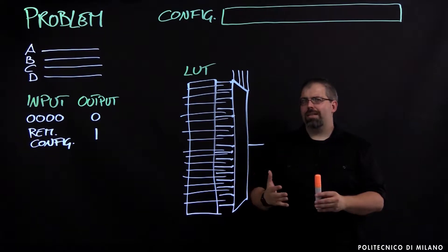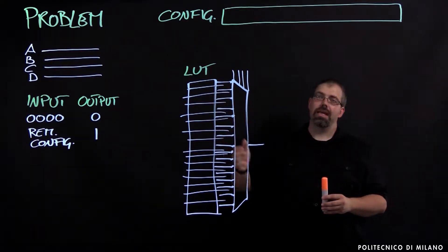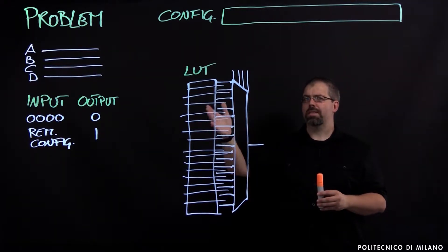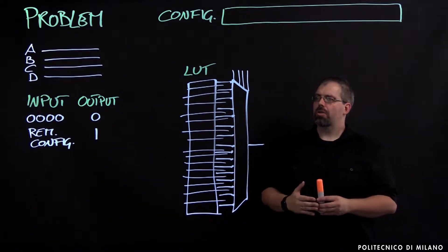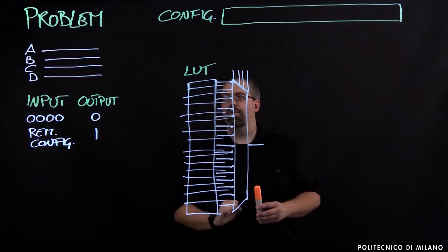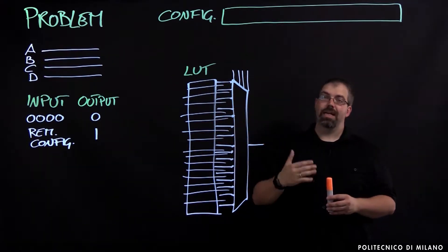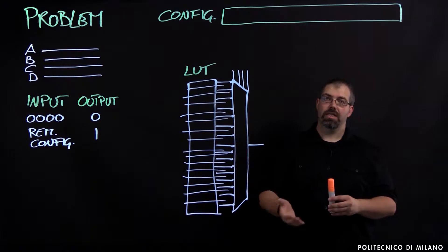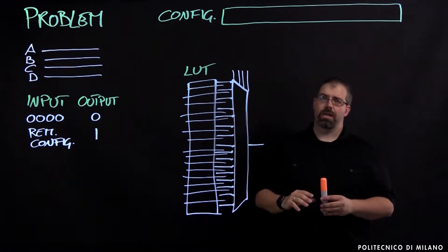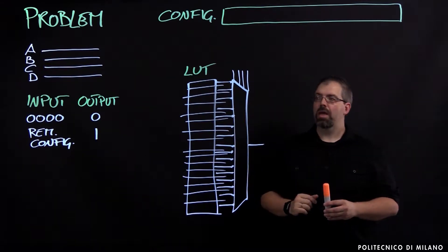In order to do that we need to introduce some semantics: zero means the line is not used, one means the line is in use. So, the input 0, 0, 0, 0 is going to provide us 0 as output, but all the remaining configurations of these four inputs are going to produce 1 as output.